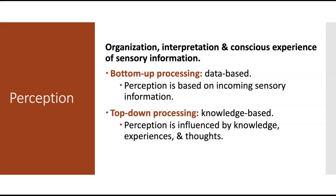Once sensation has occurred — our sensory receptors have picked up information from the outside world and sent it to the brain — the next step is perception. This is where we make meaning out of that information. Perception is the organization, interpretation, and conscious experience of sensory information. For example, hearing a ringing sound is sensation; knowing that it's your phone versus the doorbell is perception.